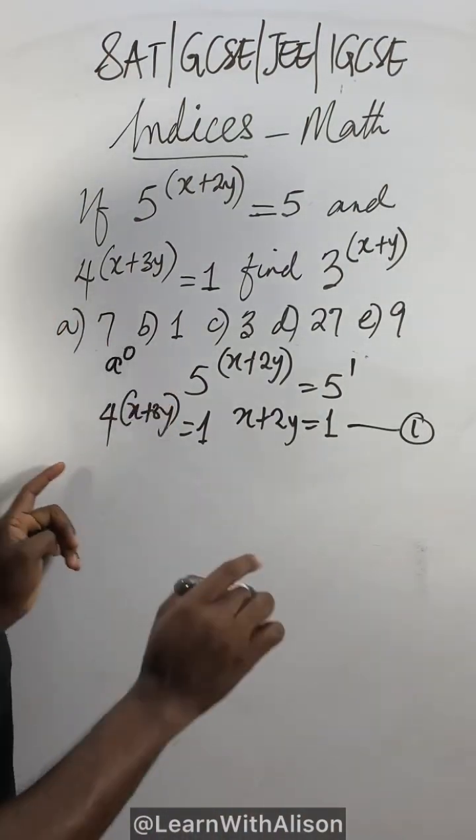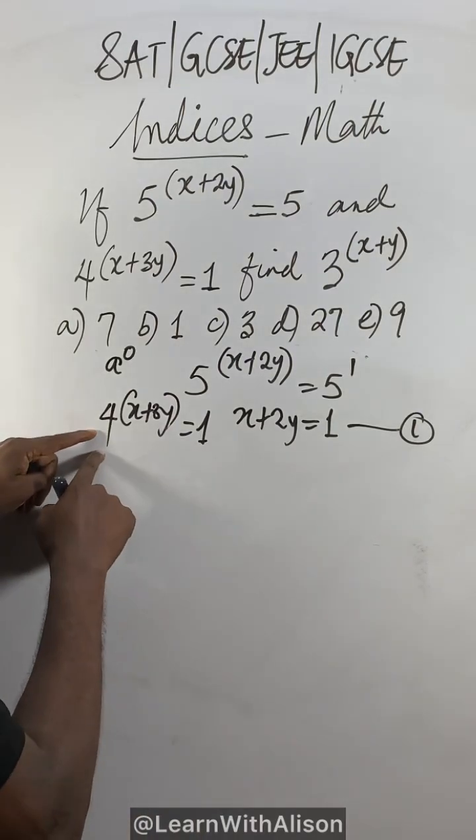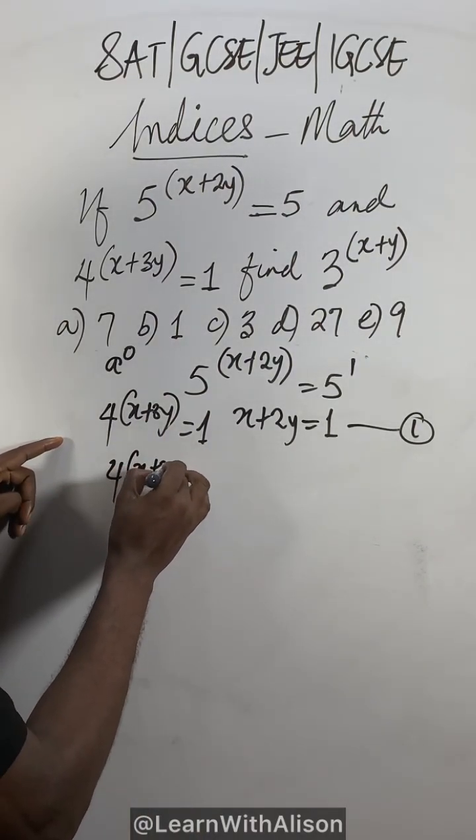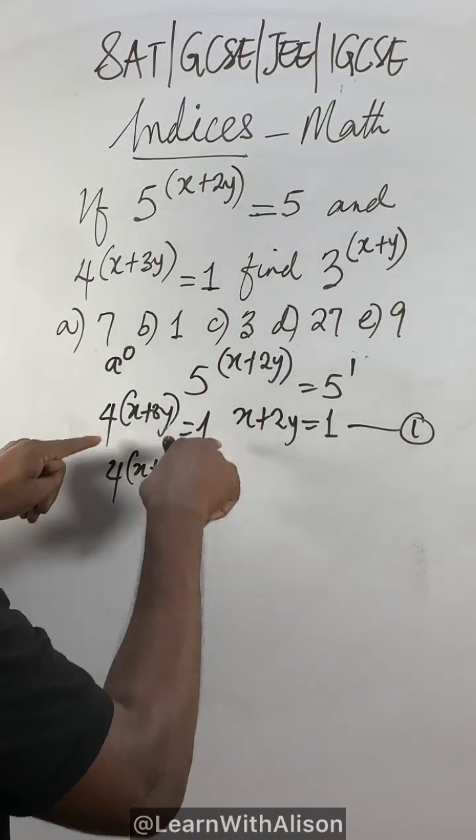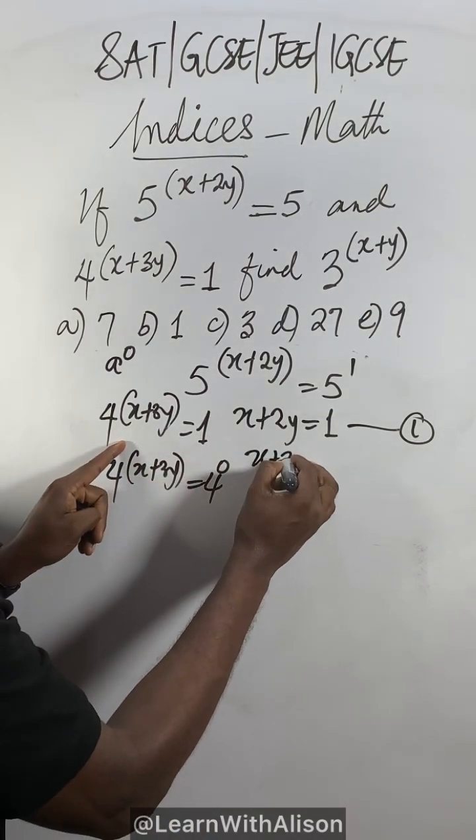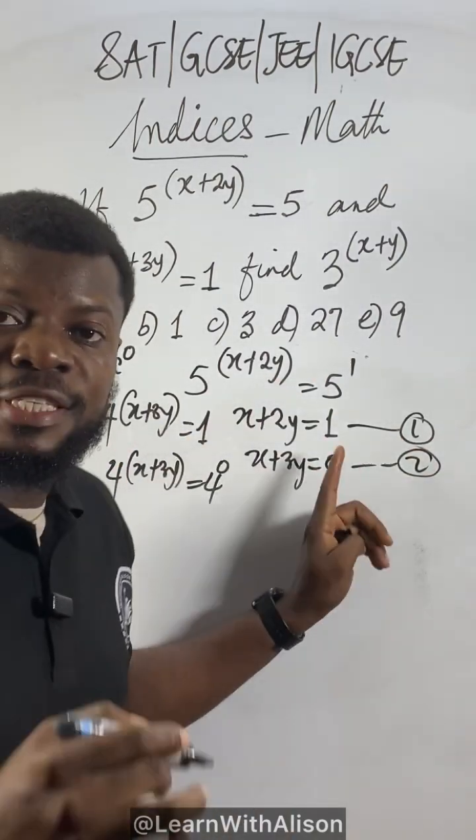So the first thing I need to do, I will consider a rule that says anything to the power of 0 is 1. Anything, any number. So I can think of 4 because here is 4. I'll make sure the base here will be 4. So I have 4 to the power of x plus 3y equal to 4 to the power of 0. Notice that when the bases are the same, consider the power. So we have here to be x plus 3y equal to 0, equation 2.